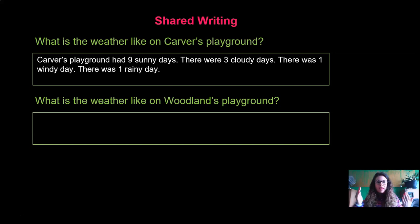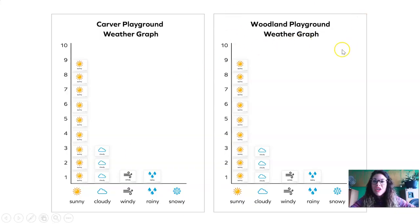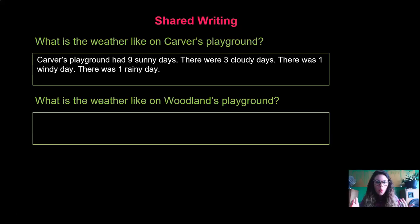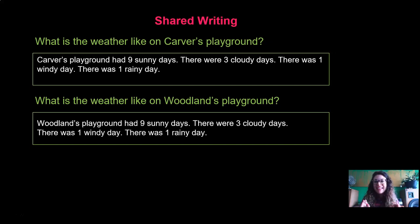The next question: what is the weather like on Woodland's playground? Let's look at Woodland's playground weather graph. Do you remember — were Carver and Woodland's weather graphs the same or different? They were the same! There were the same number of sunny, cloudy, windy, and rainy days. So Woodland's playground had nine sunny days, three cloudy days, one windy day, and one rainy day.